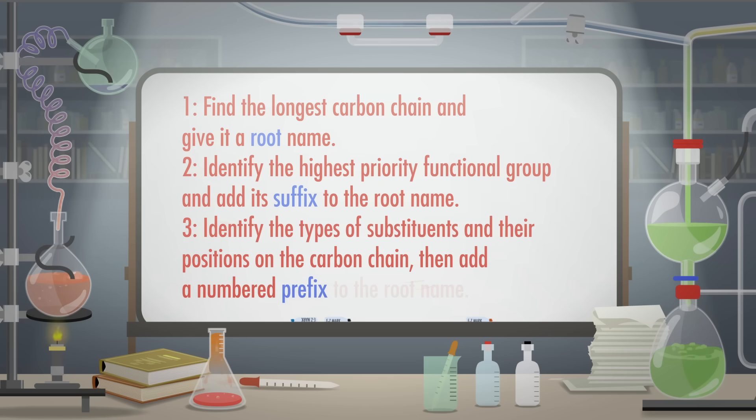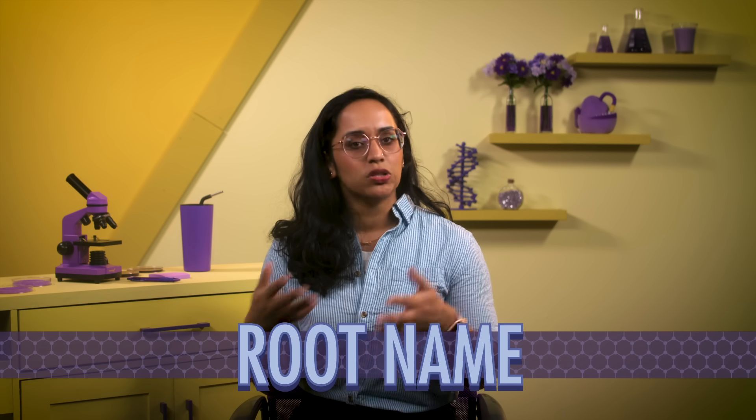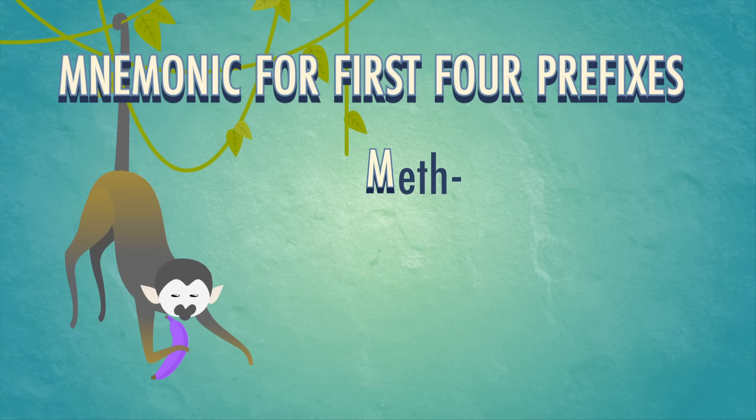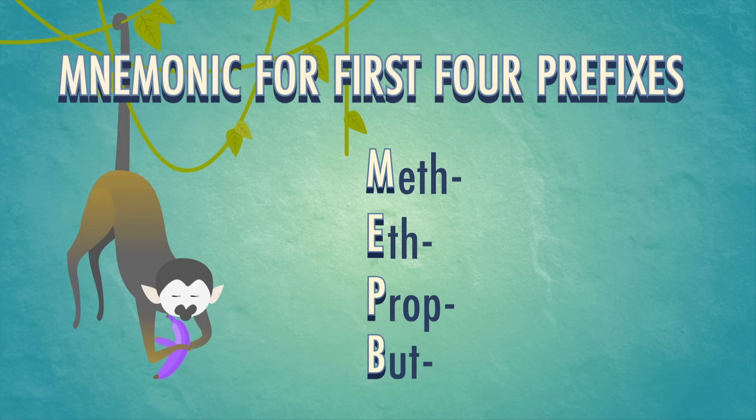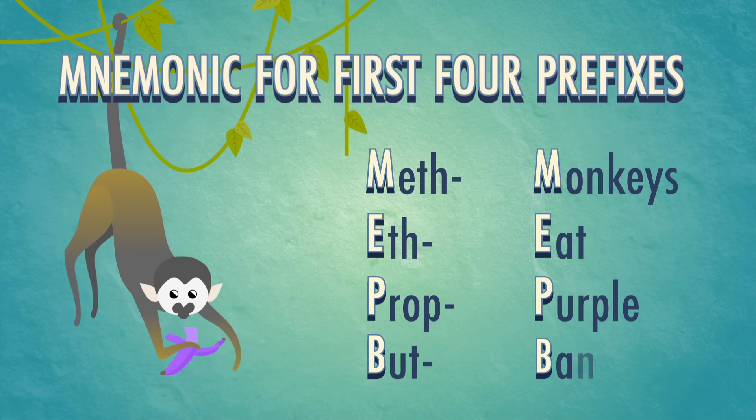Then add a numbered prefix to the root name. So we start building any systematic name with the root name, which comes from the longest carbon chain in the molecule. The word "longest" is key, because some molecules will have long chains sticking out that can throw you off. Carbon chains containing up to four atoms have arbitrary-sounding root names. This can be a little tricky to remember, but you can use this mnemonic to help: Monkeys eat purple bananas.